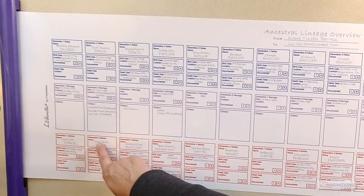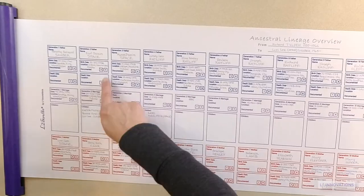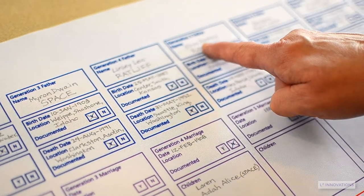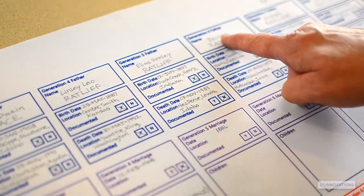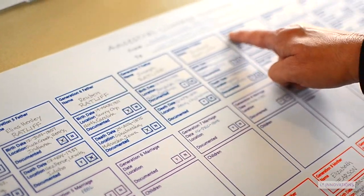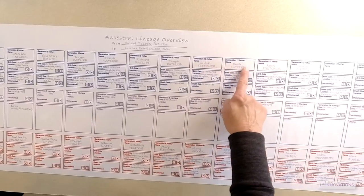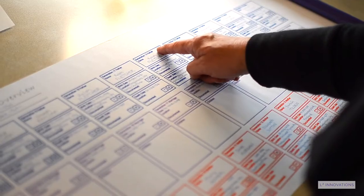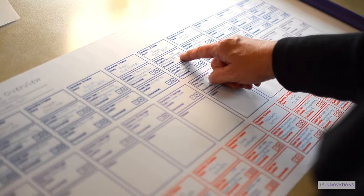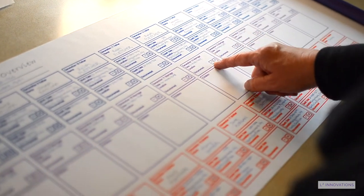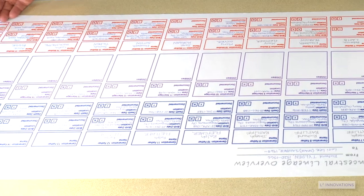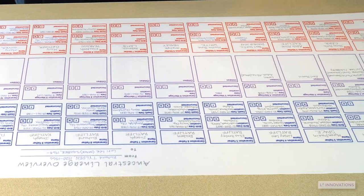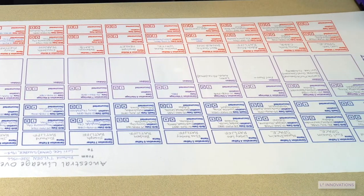Continue moving right with each generation going back into history until you've reached your notable ancestor. When completed this way, each column then becomes a family group sheet for each generation, for up to 16 generations in one Ancestral Lineage Overview scroll.